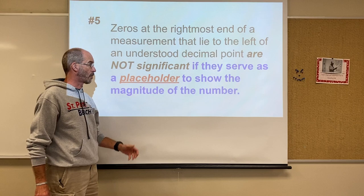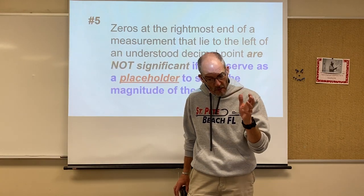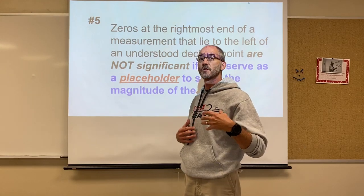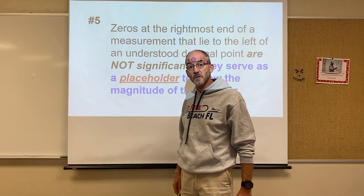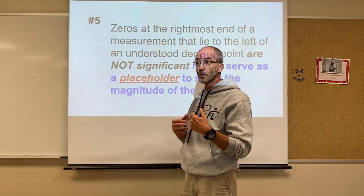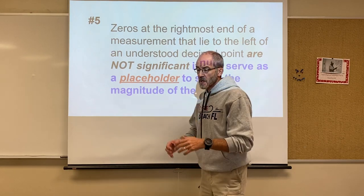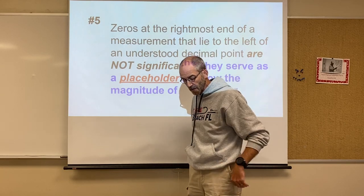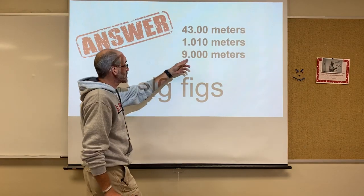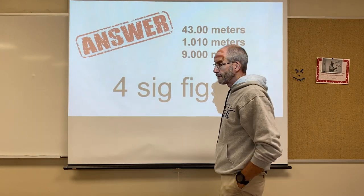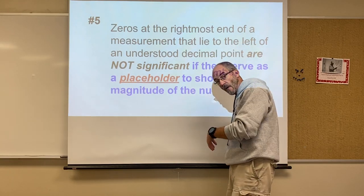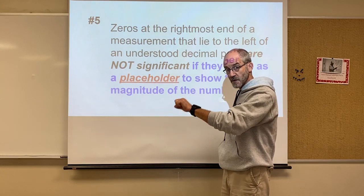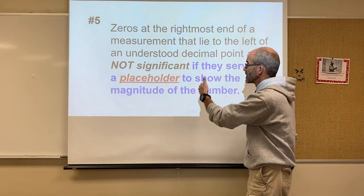Rule number five: zeros at the rightmost end of a measurement that lie to the left of an understood decimal point are not significant. This is where you have to think carefully. The difference is that the zeros in rule four were illustrating precision, while these zeros are simply acting as placeholders — similar to the insignificant zeros from rule three.